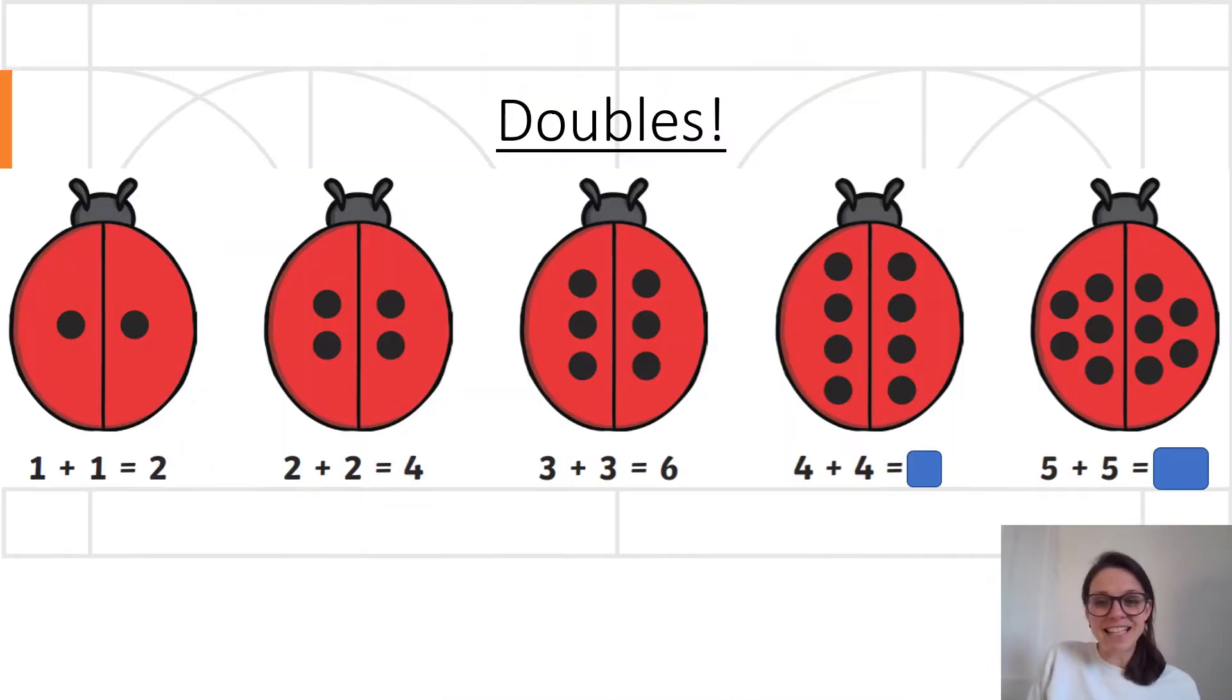So the first thing we're going to look at today is our doubles. Now remember that when we're talking about doubles we mean that there's two of something. So if we're looking at one, we're talking about two ones. One and one, how many have I got? Two. Fantastic.